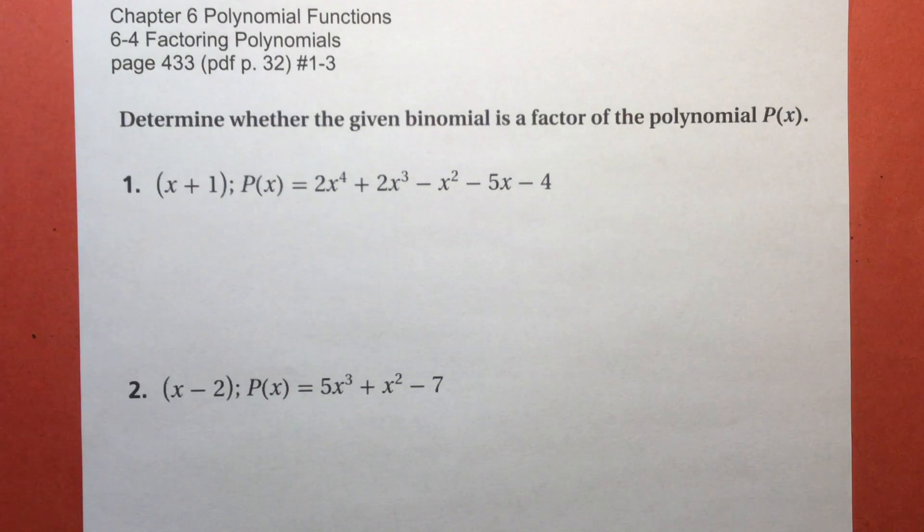For these problems, we're going to determine if the binomial that we're given is a factor. How do we do it? We divide. We'll probably use synthetic division. If that doesn't work, then we'll use long division. If I get a remainder, then that means it's not a factor. But if I do not get a remainder, or if the remainder is 0, those mean the same thing, then it will be a factor.